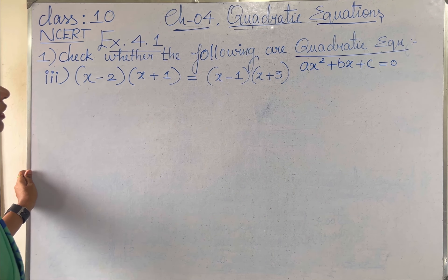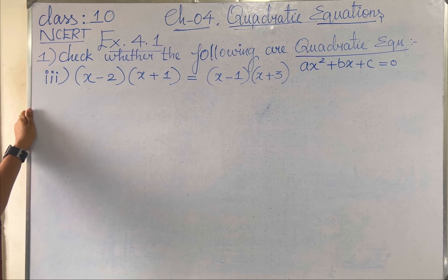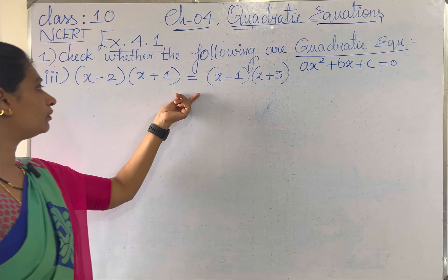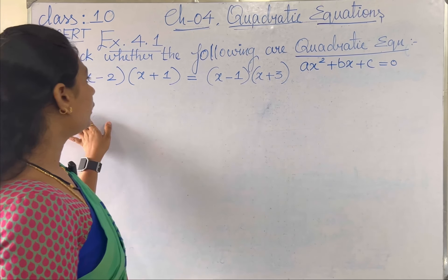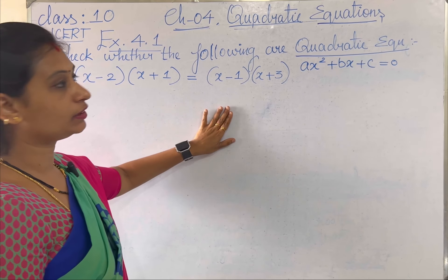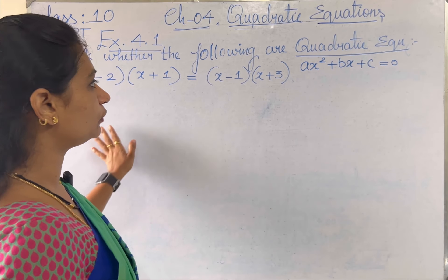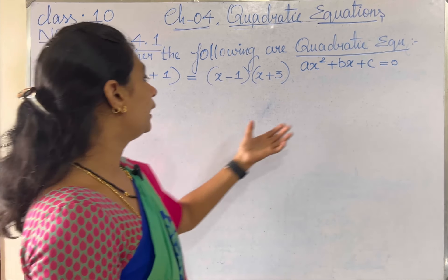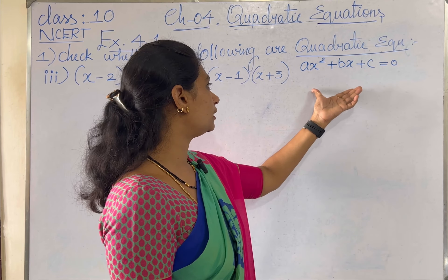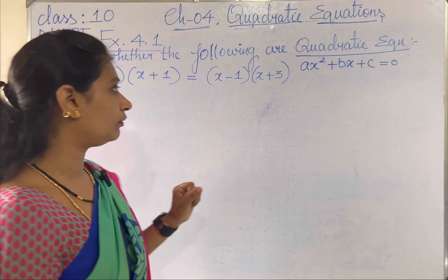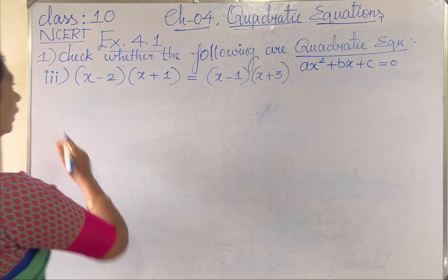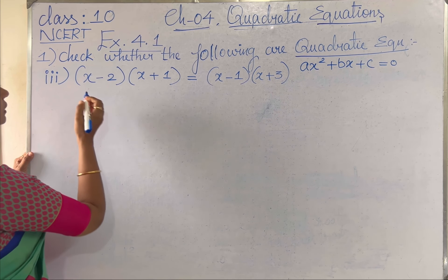Check whether the following are quadratic equations. The given equation is (x minus 2)(x plus 1) equal to (x minus 1)(x plus 3). We need to check whether the given equation is a quadratic equation, which means it should satisfy the condition of the general form ax² plus bx plus c equal to 0. Let me simplify the given equation.